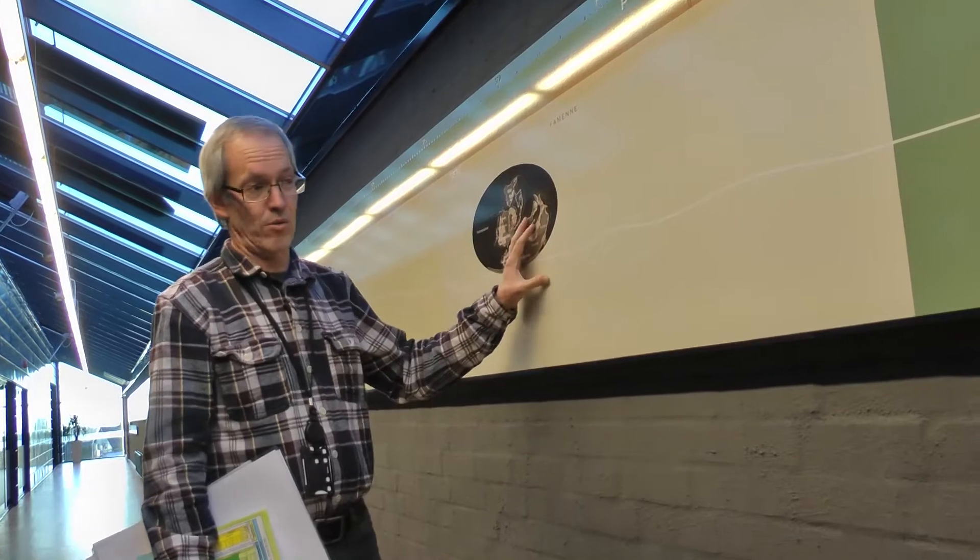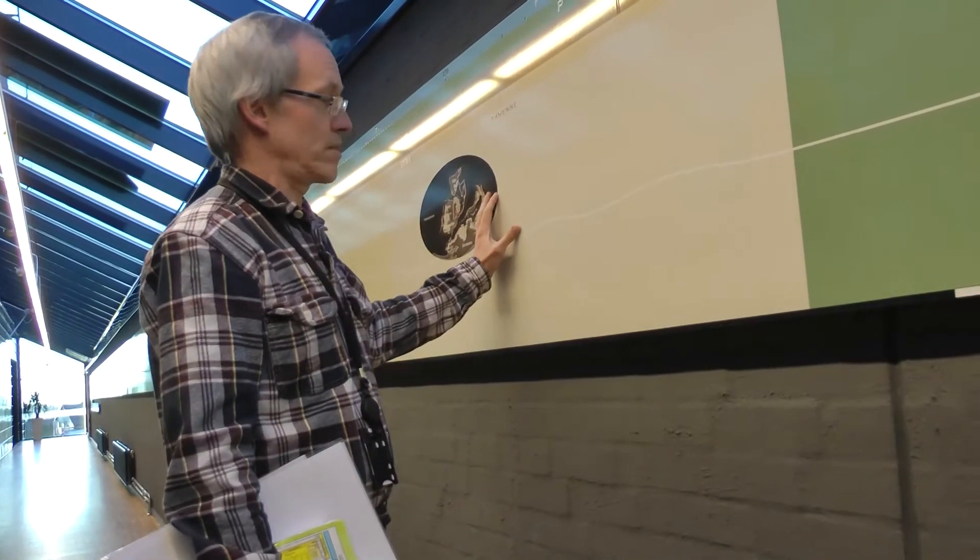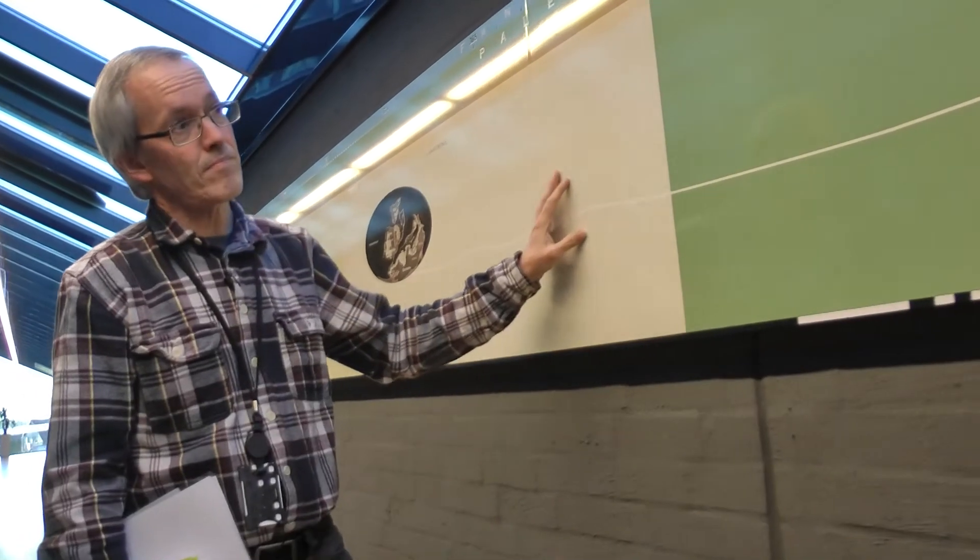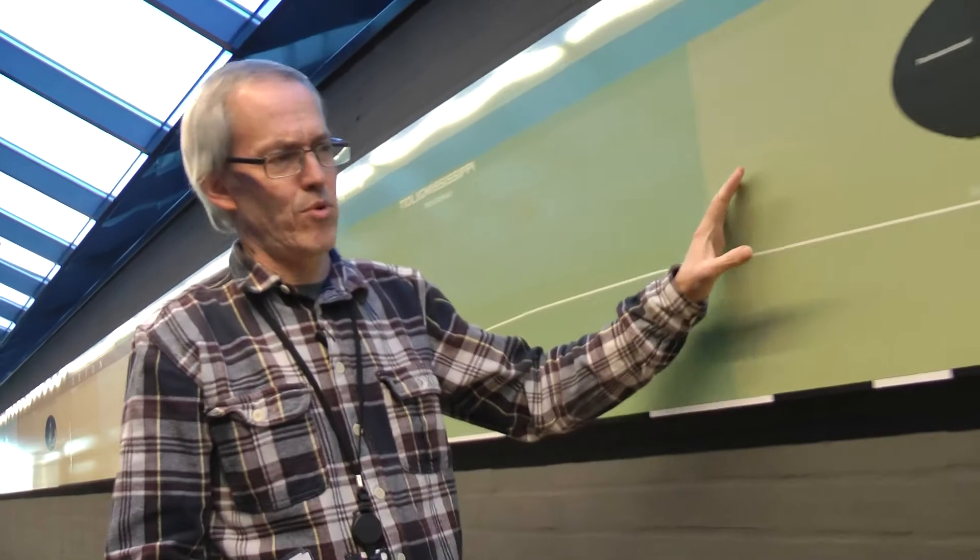Here in the Devonian, this is also where we have the oldest geologically oldest petroleum reservoir produced and producing in Norway. When we pass into the Carboniferous, this mountain chain is more or less eroded almost flat and we have very low-lying lands.